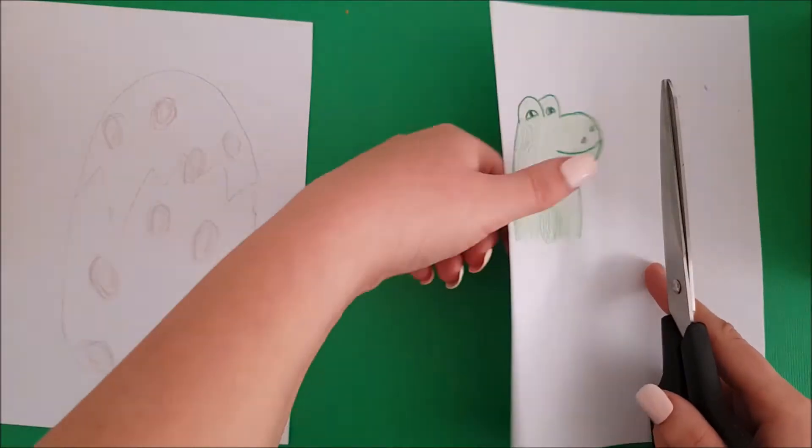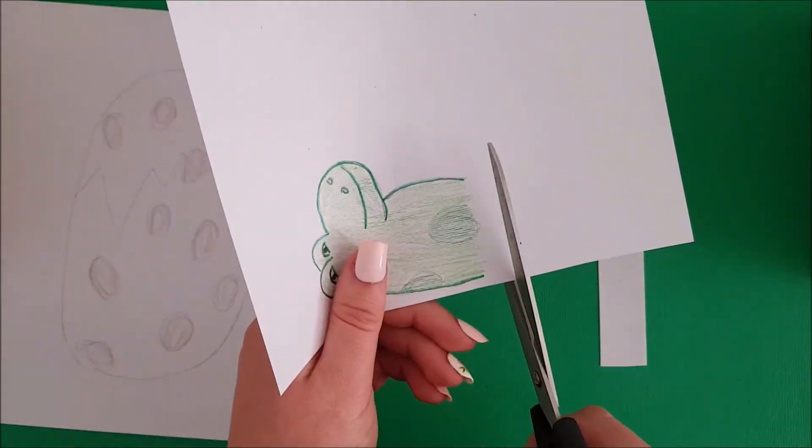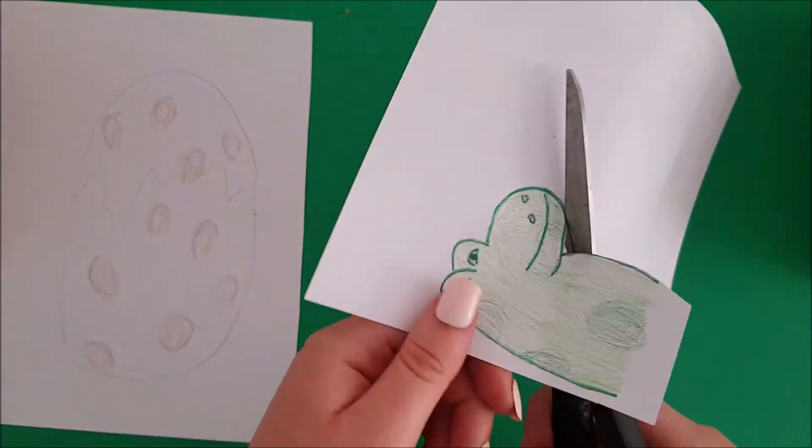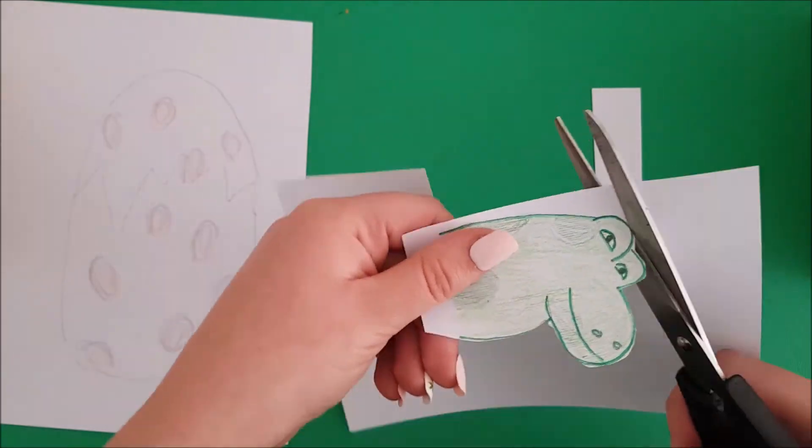Cut a block around the egg and put it aside for now. Then cut out your dinosaur. Leave some extra paper underneath it.